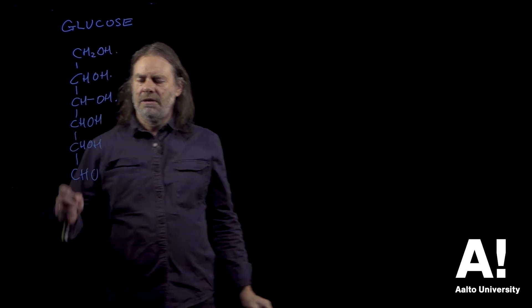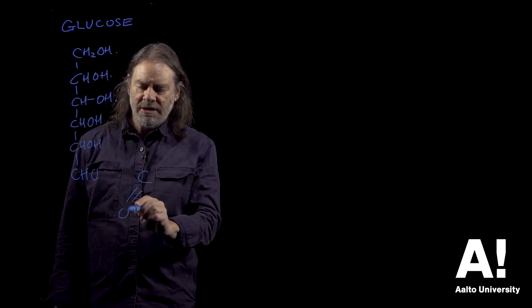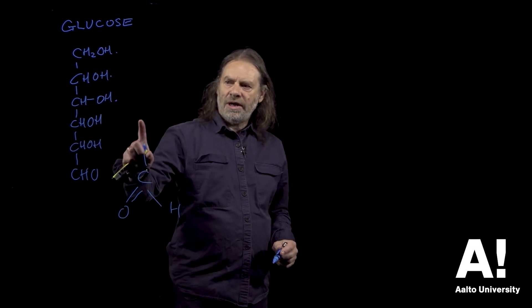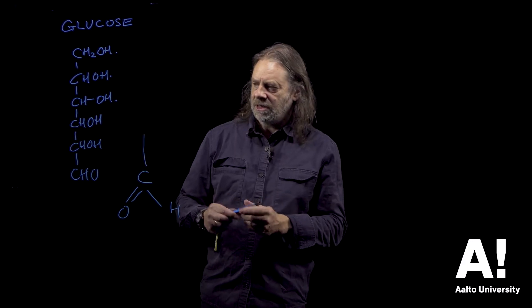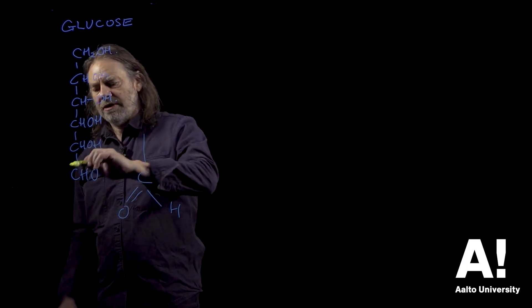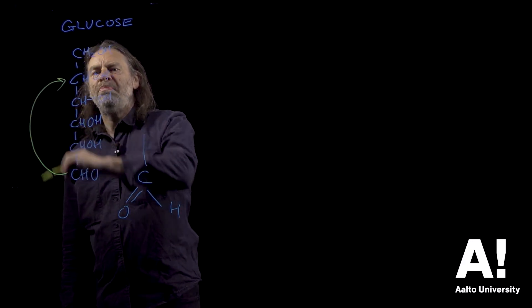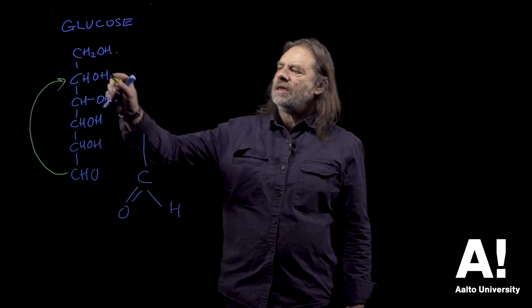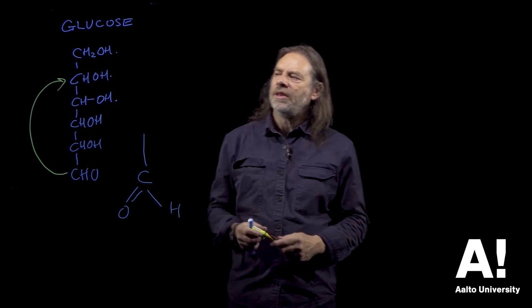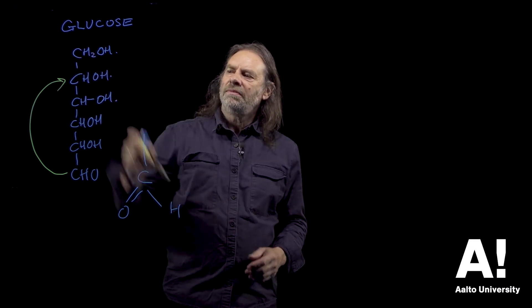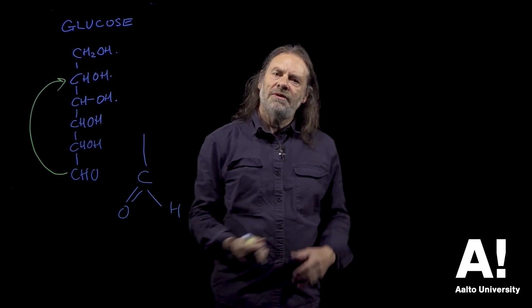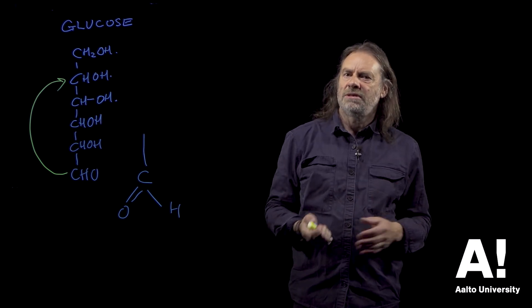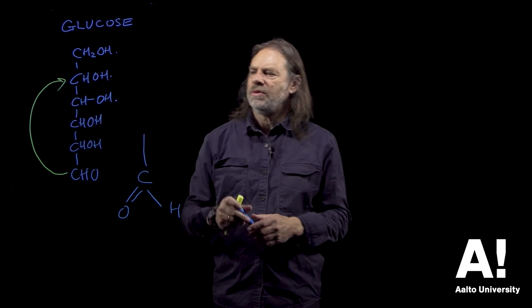So as I've said there's an aldehyde there. An aldehyde has that sort of structure and what happens is the aldehyde comes around and bites the tail of the sugar, if you like, and it attacks that carbon there, not this one because if it attacked that carbon you'd have a seven-membered ring and seven-membered rings are not as stable energetically as six-membered rings.